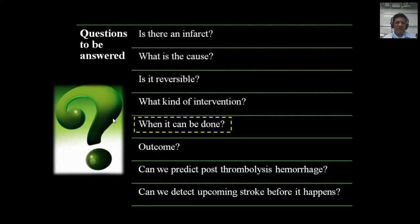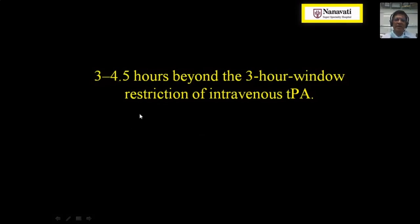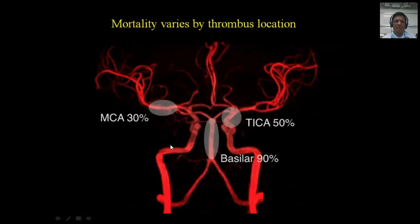The next question is when these interventions can be done. The standard window period of zero to three hours and three to six hours is rapidly changing with better thrombolysis drugs and better understanding of stroke over the last 10 to 15 years. The window period is getting extended — from three hours to four and a half hours, six hours, and twelve hours in different locations and sizes of stroke. On imaging, we also need to predict the likely outcome of thrombectomy or thrombolysis.